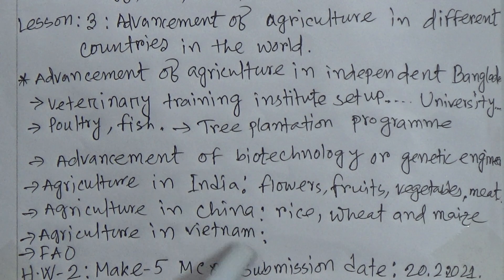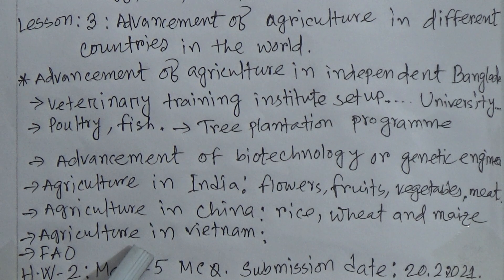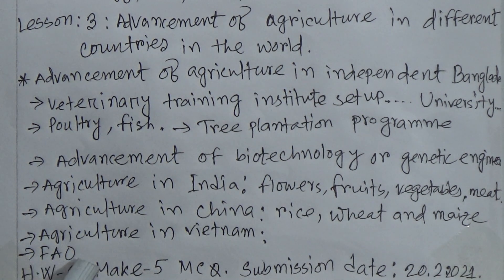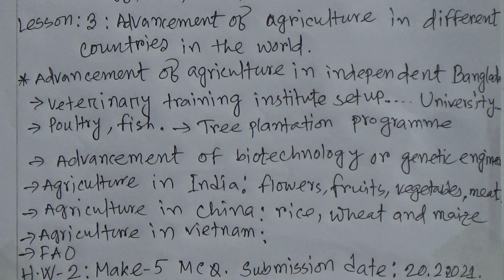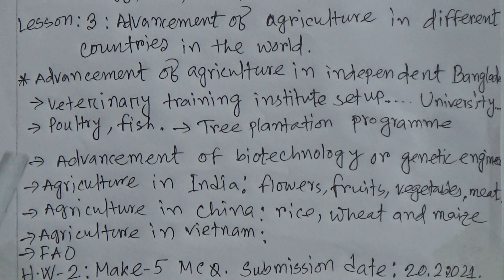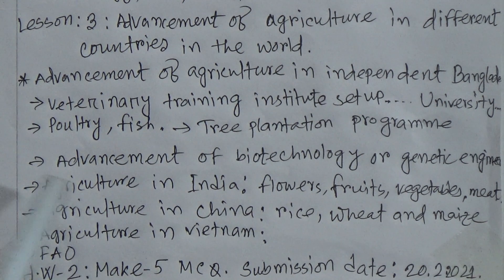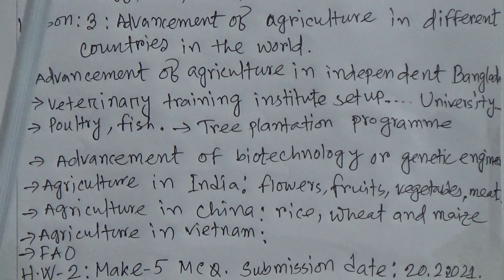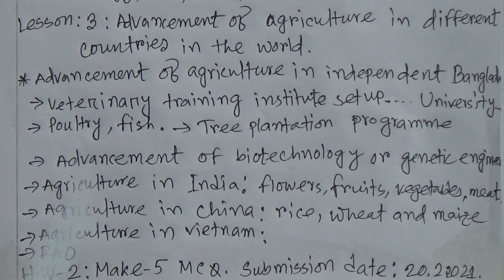Agriculture in Vietnam is also very much updated. The FAO — Food and Agriculture Organization — always plays an important role in producing updated crops. In the year 2020, this organization, the Food and Agriculture Organization, got the Nobel Prize in Peace. This was basically about Chapter 1, Lesson 2 and 3.